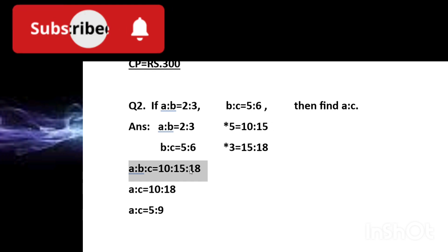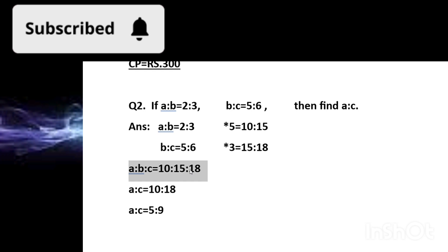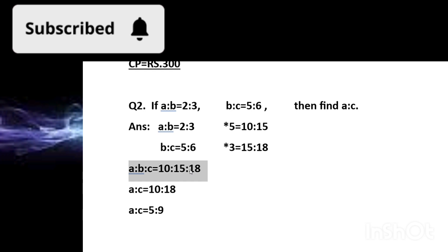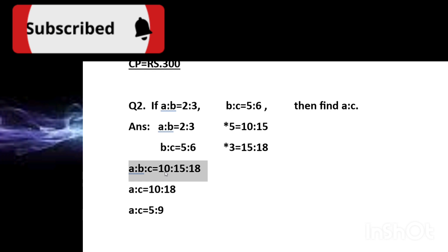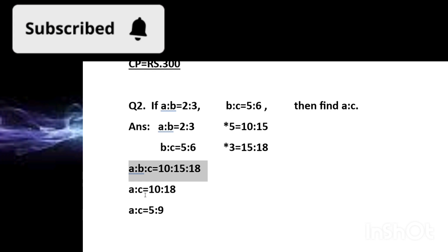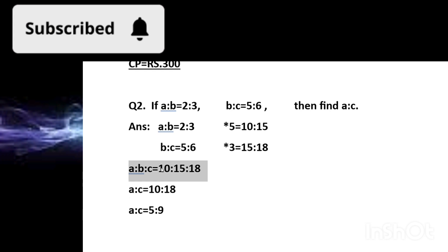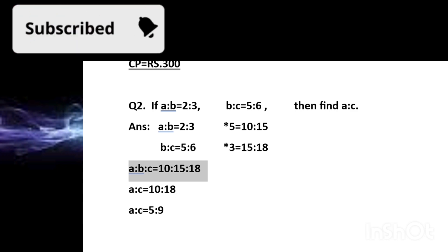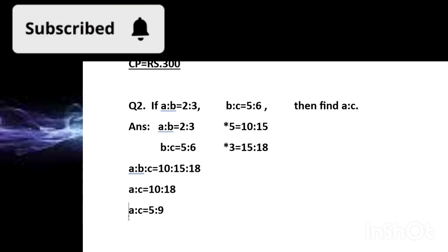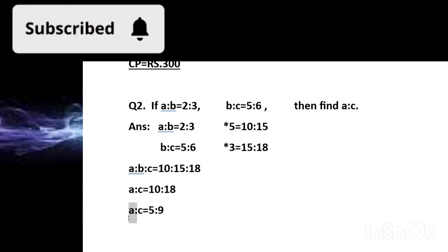Since b's value is now the same in both ratios, we can write a:b:c = 10:15:18. The question only asks for a:c, so we omit b: a:c = 10:18. Dividing both by 2 gives us 5:9. So the answer is a:c = 5:9.